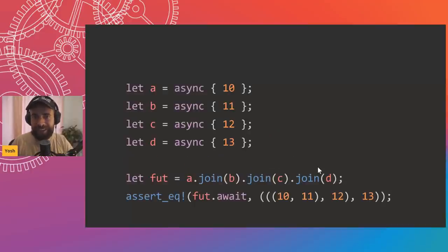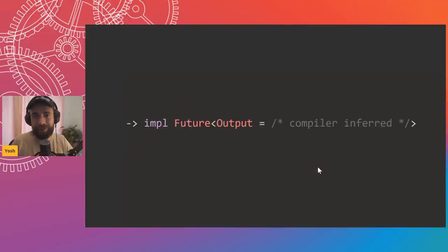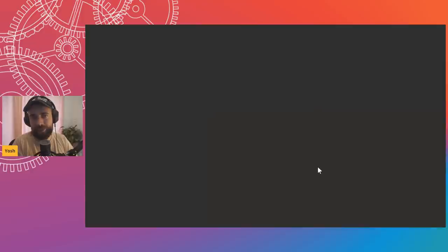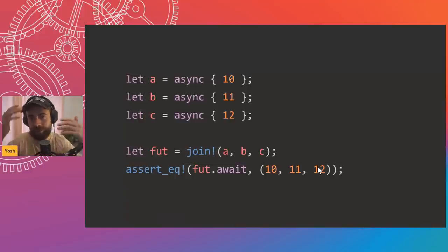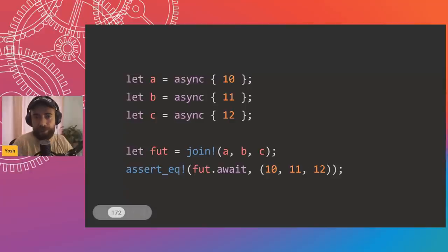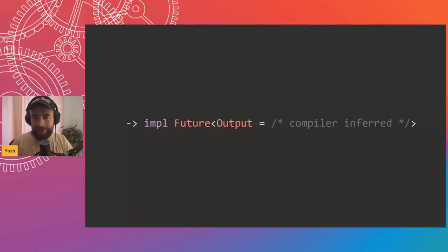The way this is solved in many libraries is by having a join! macro, which uses an async block and codegen based on the input to return a flat tuple of output types. The return type is generated by the compiler at compile time using the async block. But a key question is: is the length known at compile time? If not, we can put futures into a Vec, keep adding them without knowing the length up front, then call something to join the Vec and get a Vec back.